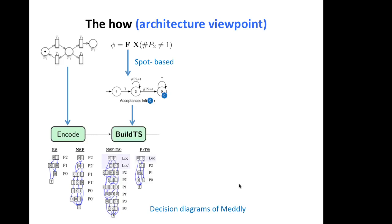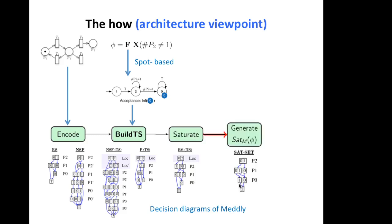The cross-product transition system is built using saturation, and the final SAT set is computed using an improved version of the Emerson-Lei algorithm.